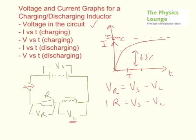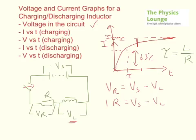63% of the change takes one time constant. A second time constant gives 63% of the remaining change, and after about 3, 4, 5 time constants you're basically at the maximum. The time constant is proportional to the inductance and is actually divided by the resistance this time — T equals L over R. Whereas with capacitance the time constant was T equals RC. With inductors, a higher resistance reduces that initial current from the supply, meaning less response from the inductor.